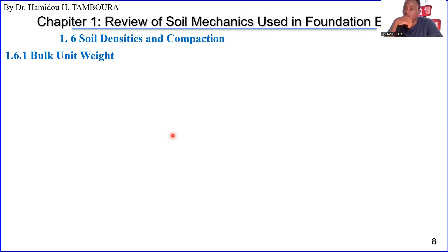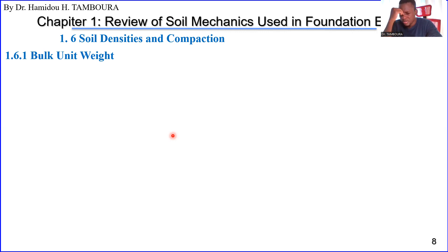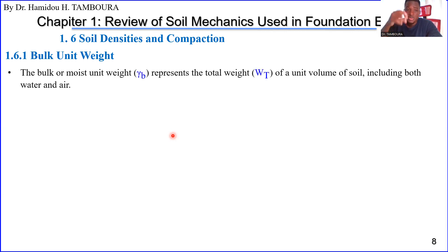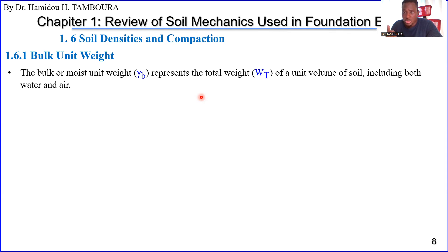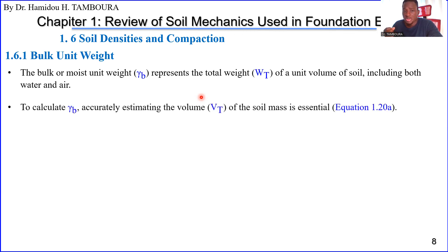The bulk unit weight — as the name suggests — includes everything. It represents the total weight per unit volume. This means the weight includes not only soil particles but also water and air within the soil. We will name it gamma_b, which stands for bulk.